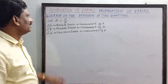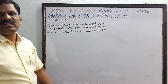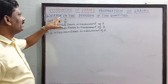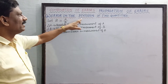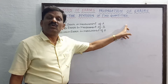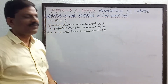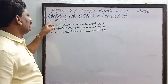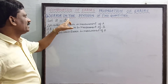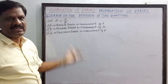Hi students. Now we are discussing combination of errors, and the fourth category is error in the division of two quantities, or quotient of two quantities a divided by b. So let z be the division or quotient of a and b — z is equal to a by b.